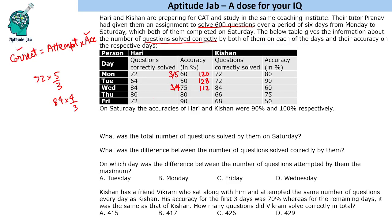80% accuracy with 80 correct means 100 questions attempted. 90% accuracy with 72 correct means 80 questions attempted. This is how we find the number of attempts — we are given correct questions and accuracy.